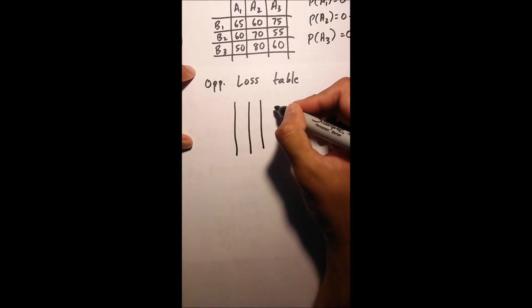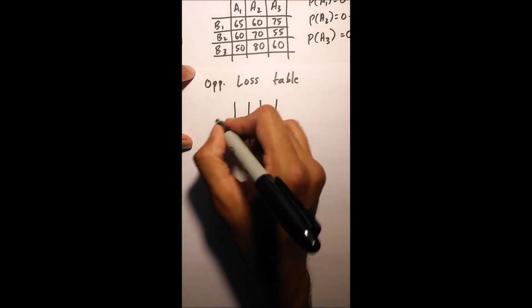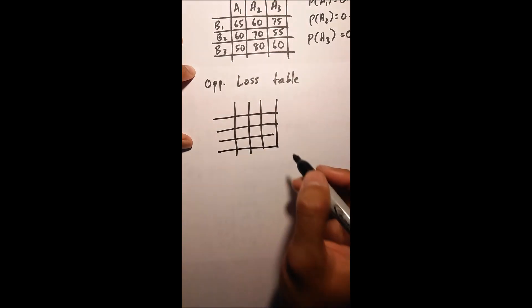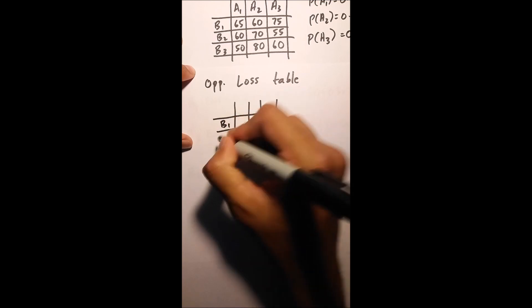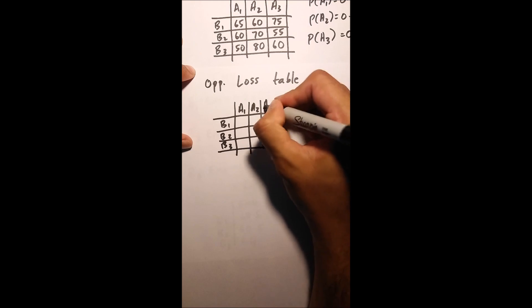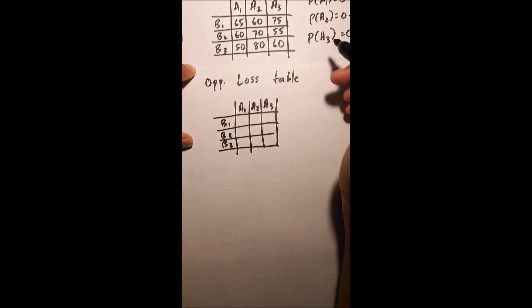The number of rows and columns are exactly the same as the payoff table. We start by drawing rows and columns of the same size: B1, B2, B3, A1, A2, A3.